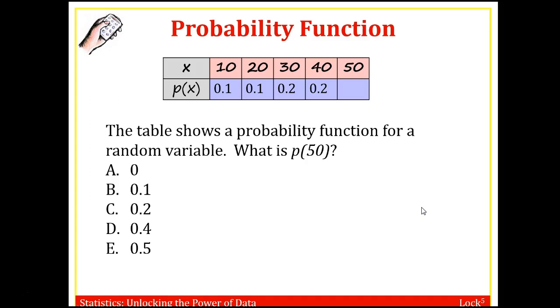Alright, one last question before we take a break and split up the video. So the table shows a probability function. So we just have a table. We don't know what this means, but we know the outcome X could be 10, 20, 30, 40, or 50. And we know there's a probability function. What is the probability of 50?